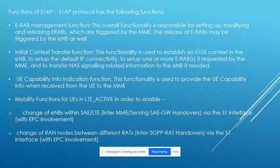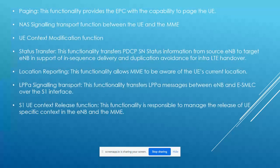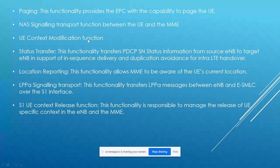Mobility functions include MME-to-MME handovers, serving gateway handovers, intra-RAT handovers, and inter-RAT 3GPP handovers, all supported by the S1AP protocol. Paging functions are also provided by S1AP. Additional functions include NAS signaling transport, security signaling between UE and MME, UE context modification, status transfer, location reporting, and many more.